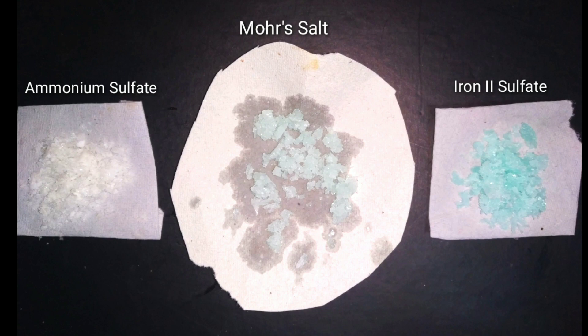In this figure you can see the difference in colors. The Mohr salt is lighter than the iron 2 sulfate.